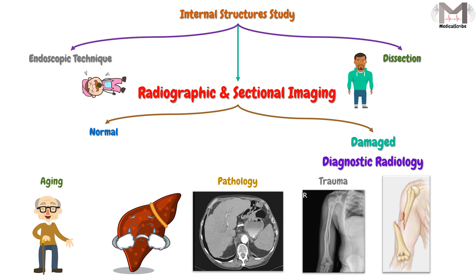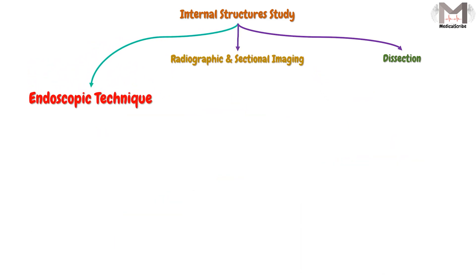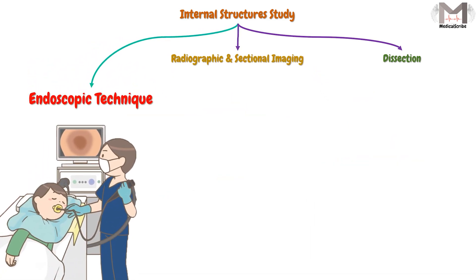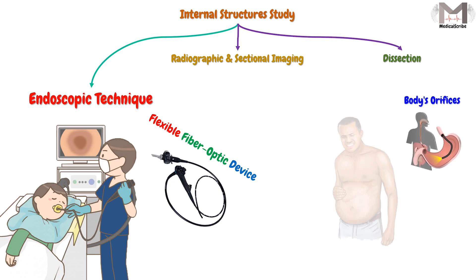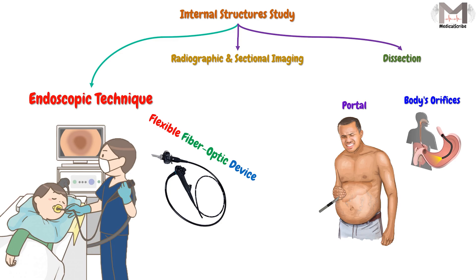Now we will talk about the last method we have, which is the endoscopic techniques. Here we will use a flexible fiber optic device that we will insert into either one of the body's orifices, or by making a small surgical incision called the portal. Then we will insert this device through it to examine the internal structures, such as the interior of the stomach.